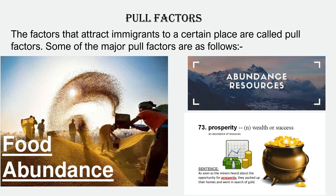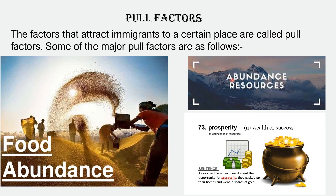These are the following pull factors: abundance of food, abundance of resources, and prosperity, which includes wealth and success. All these are very attractive and immigrants want to go to areas where all these are found in abundance. People who lack food in their countries want to be in a place where there is abundance of food — at least two square meals a day. A country with resources will always provide proper work for migrants, and all these lead to the wealth and success of people who are migrating.